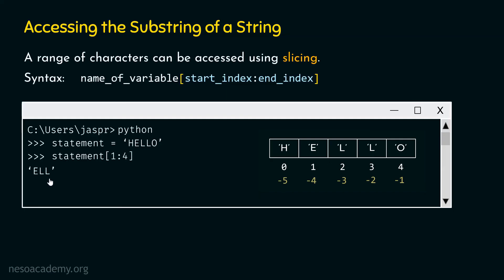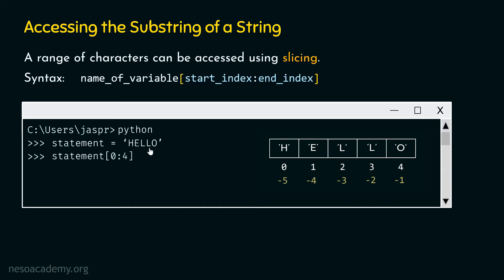Let's try to access some more substrings. This time, let's access HELL. We need to type: statement, opening square bracket, start index 0, colon, end index 4. We start from index 0 to include H, and provide 4 as the end index because we don't want to include the last character. The range is 0 to 4, but we get characters from index 0 to 3. By hitting enter, we will get HELL as the result.